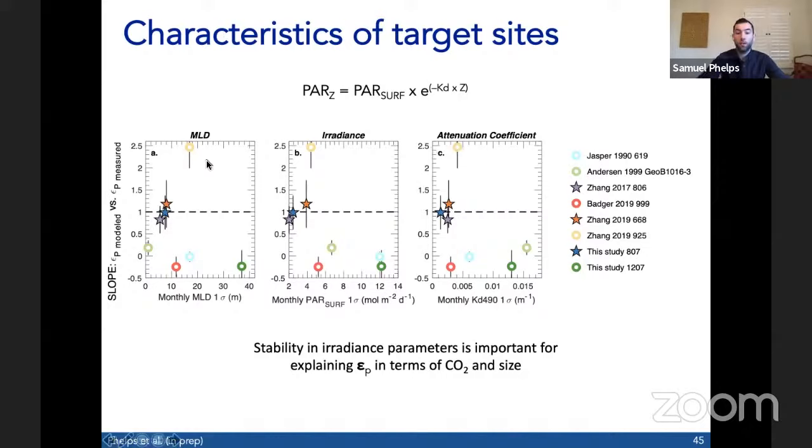When we look at the modern monthly variability in each of these parameters - the irradiance at the surface, the attenuation coefficient, and the mixed layer depth - what I'm plotting here is the standard deviation of the monthly average values of each of these parameters at these locations on the x-axis, and the slope of the modeled EP versus the measured EP at each of these sites. Perhaps unsurprisingly, sites with oceanographic conditions of low variability - kind of low latitude, deep mixed layer, minimal dynamics - perform best. So that's where a slope is close to one. Those locations all have low variability in the attenuation coefficient, the surface irradiance, and the mixed layer depth. To go deeper in time, we'll target sites that have lower variability in these parameters.